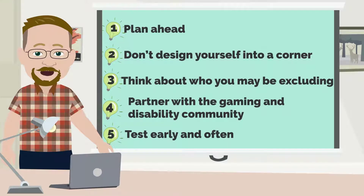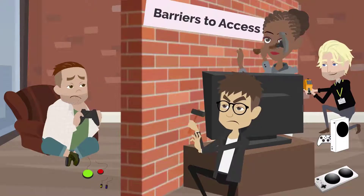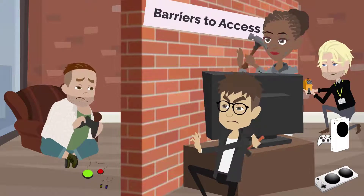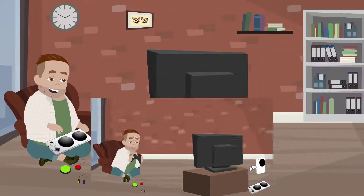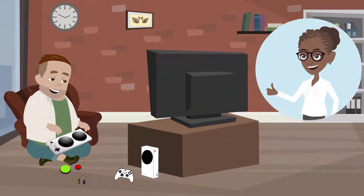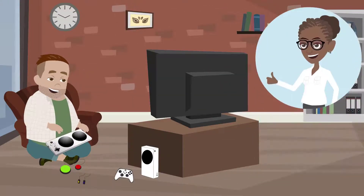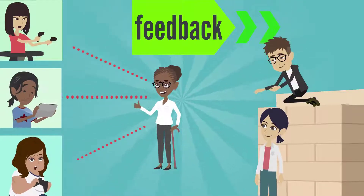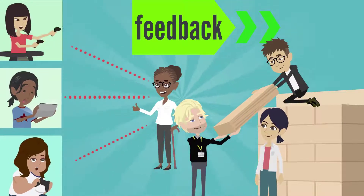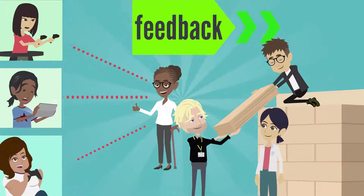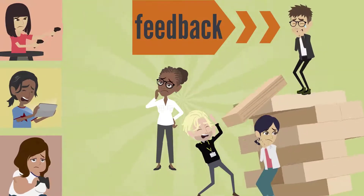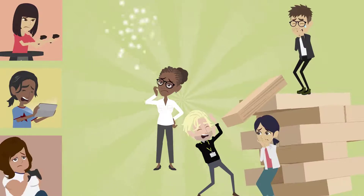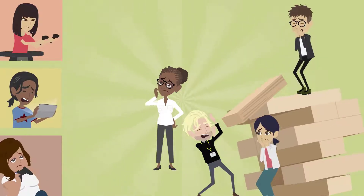Number five: test early and test often. When it comes to accessibility, it's important to identify barriers to access as early as possible in order to allow time to properly build solutions. While it can seem tempting to wait until a playable build of the game is ready to gather feedback, at this point it might be too late to implement the nature of feedback you may get from the gaming and disability community.